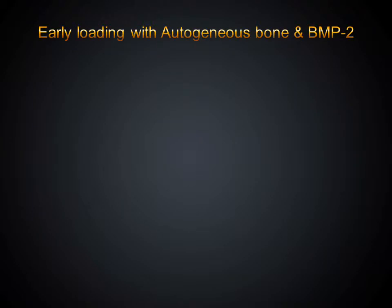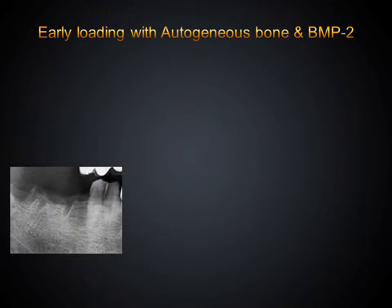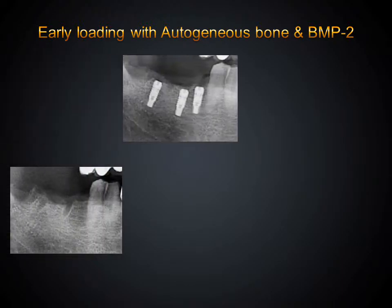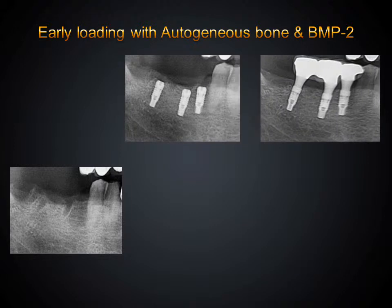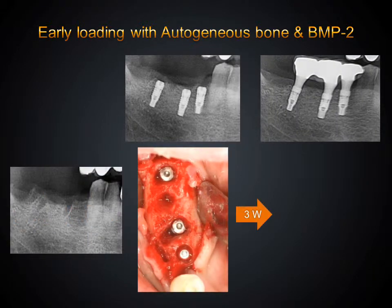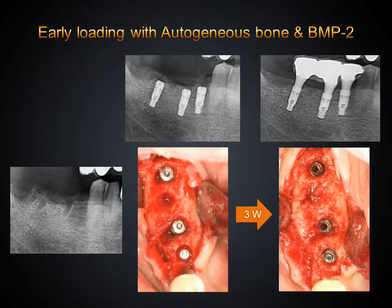To evaluate the effect of RHBMP2 on regeneration of inlay grafts, autogenous bone particles saturated with RHBMP2 were examined at 3 weeks healing after immediate implant placement in fresh extraction sockets. The extraction socket defects around the fixture were filled with new dense bone. This indicates the possibility of early loading for immediate implant placement in mandibular posterior teeth.